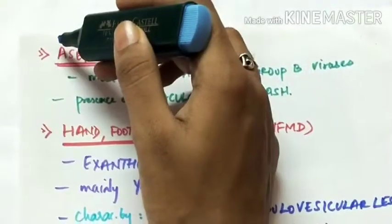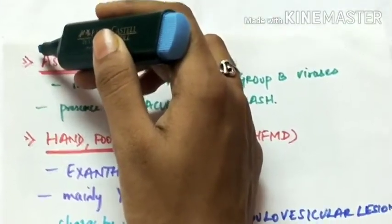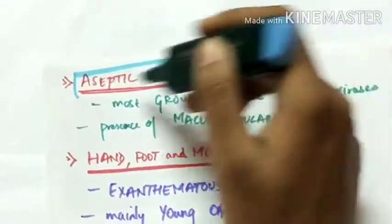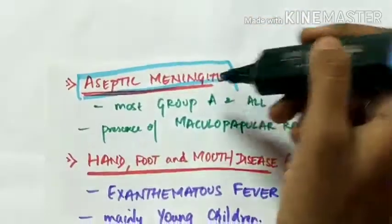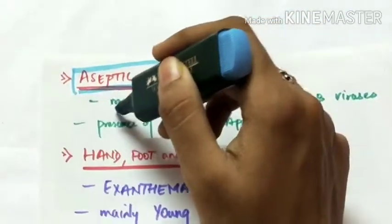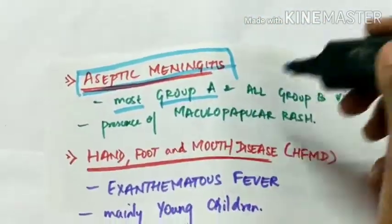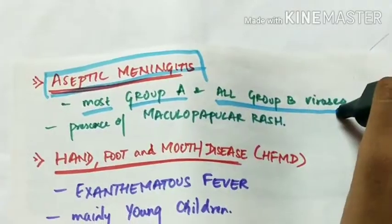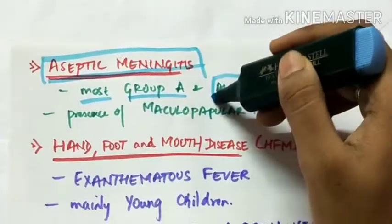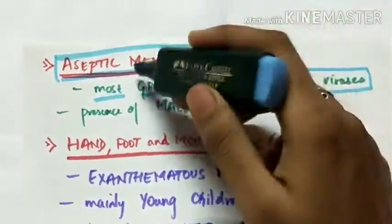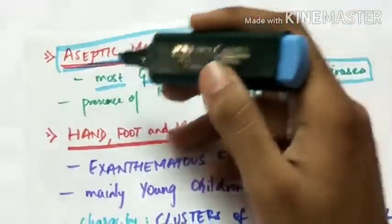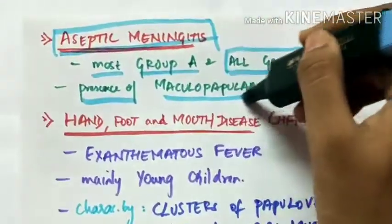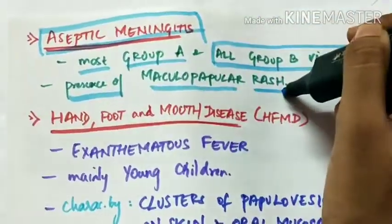The next disease caused by Coxsackie group A viruses is aseptic meningitis. It is caused by most group A viruses and also all group B viruses, and there is presence of maculopapular rash.